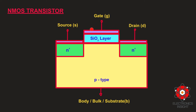Gates of earlier transistors were fabricated from metal, so the stack was called metal oxide semiconductor, or MOS transistor. In an NMOS transistor, we have heavily doped N-type source and drain regions and a P-type substrate. The vice versa happens for a PMOS transistor. The current flow in a MOS transistor is controlled by a voltage applied to the gate, hence it is also called a voltage control device.